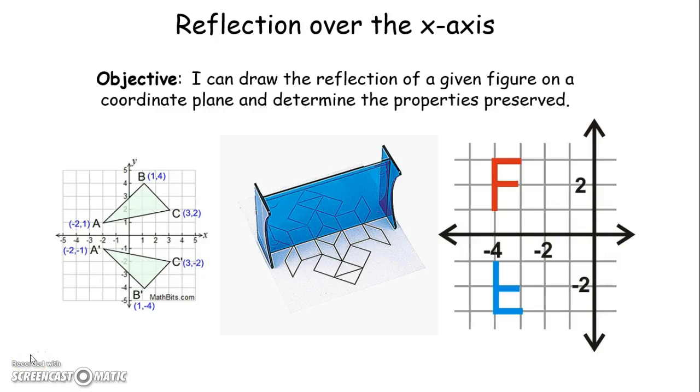Today we're going to take a look at reflecting over the x-axis. In class, you did a lab of reflecting over the x-axis using a mirror, that geometry tool that we laid across the x-axis and we looked through that mirror to see where our object would fall on the other side of that x-axis. So our objective is I can draw the reflection of a given figure on a coordinate plane and determine the properties preserved. Today in class, you talked about the properties preserved and you tried to come up with a rule for reflecting over the x-axis.